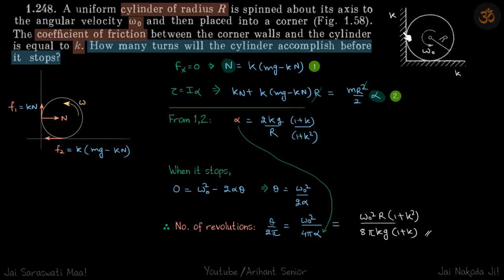And once we have the value of alpha, we can find out how many turns, so how much angle it will turn before it stops. And when we divide that by two pi, we will get how many turns it will accomplish.